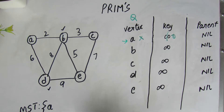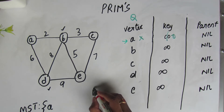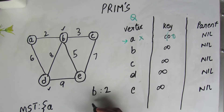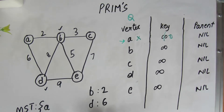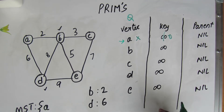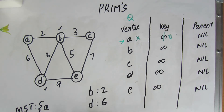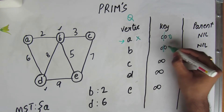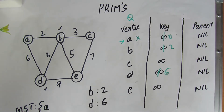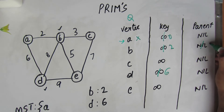Now we consider all the edges of A. We can go to vertex B with weight 2 and to D with weight 6. We update the key value only if the current key value is greater than the one we are considering, and we should not consider vertices already part of the minimum spanning tree set. B and D are not in the MST set, so we update B's key to 2 and D's key to 6, and set their parent to A.